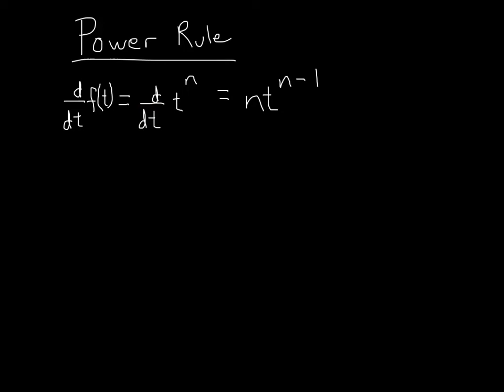So t is our unknown variable. And what this rule tells us is that the derivative of some function to a power is equal to bringing this n down in front, which we do, n down in front, and then we take our function t and raise it to the n minus 1 power. So we subtract 1 from our exponent.